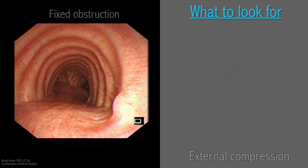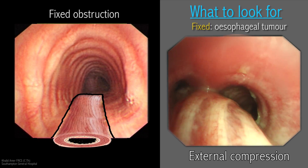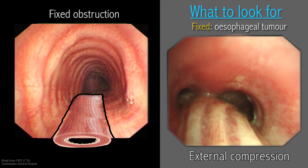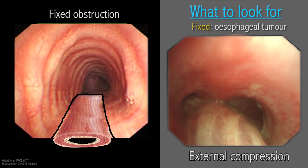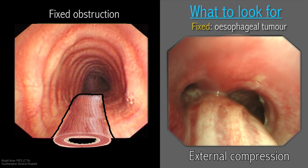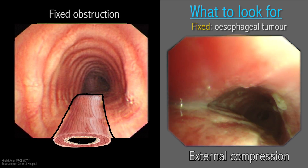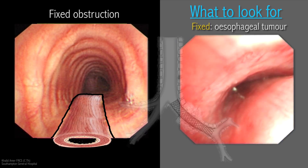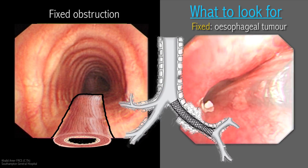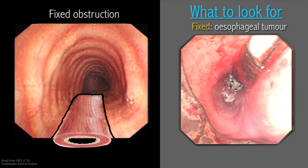Anatomically, the oesophagus is in contact with the membranous part of the trachea. Tumours of the oesophagus have the tendency to involve the membranous part, especially around the carina. A non-covered stent might be required to keep the airways patent, while a covered stent might be needed for tracheoesophageal fistula. Be aware that inserting an oesophageal stent in these conditions might make the tracheal obstruction worse, posing a threat to life, and a tracheal stent should be considered first.